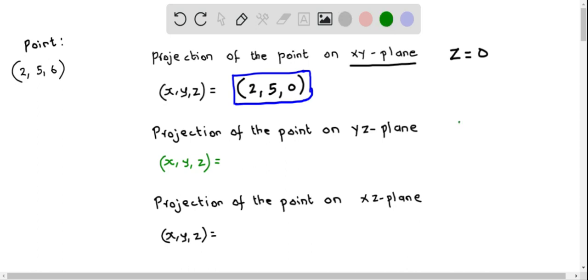On the yz plane x equal to 0. So I am going to replace x by 0 in the given point. So therefore this becomes 0 comma 5 comma 6. And this is the point which is projected on the yz plane.